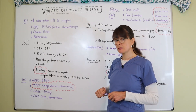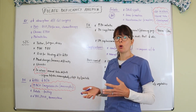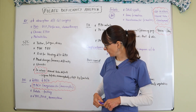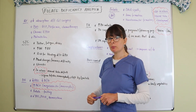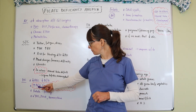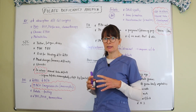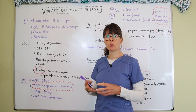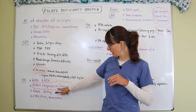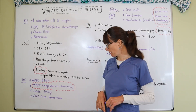For diagnostic tests, on a CBC we will see anemia — low red blood cell count and low hemoglobin and hematocrit. On the red blood cell indices, the MCV (mean corpuscular volume) will be elevated, meaning that the red blood cells in folate deficiency are larger in size. This is also referred to as megaloblastic or macrocytic — bigger cells.